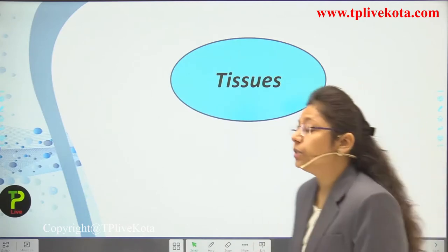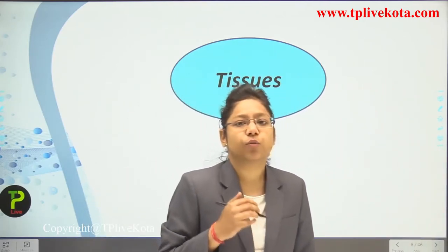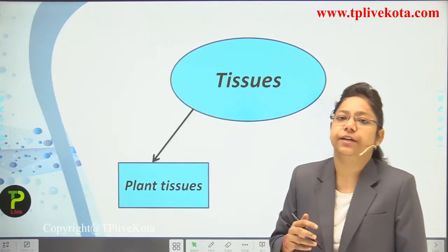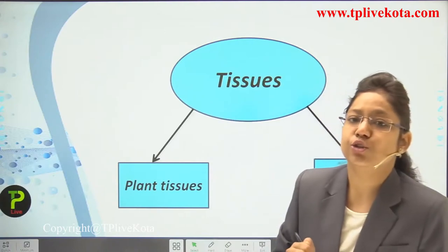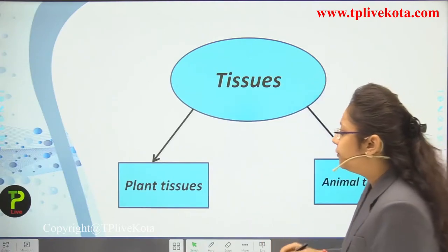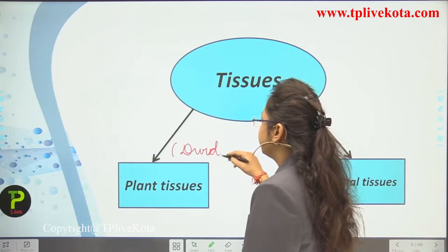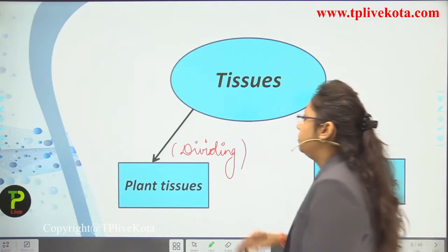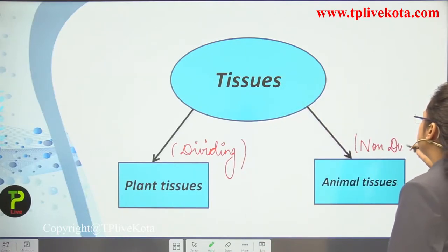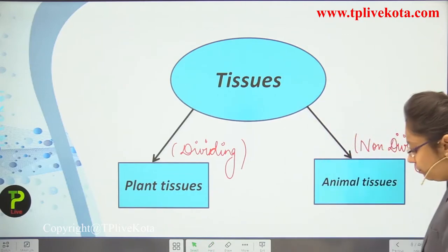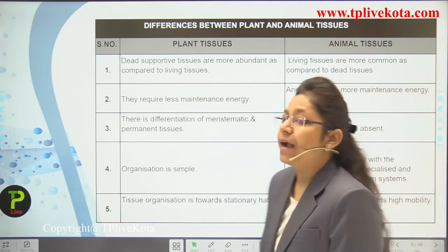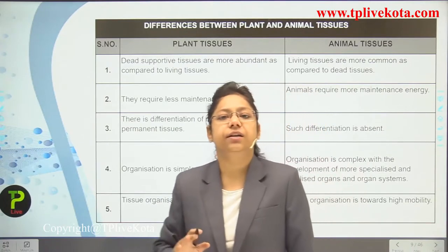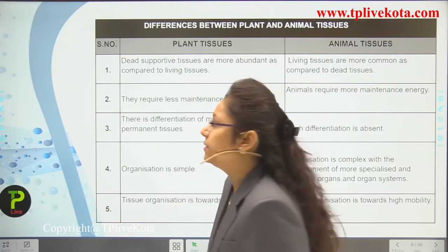Tissue is differentiated into two types: plant tissue and animal tissue. We will first learn about plant tissue. Plant tissues are dividing, while animal tissues are non-dividing. In animals, tissues are non-dividing but cells on an injured part get repaired by formation of new cells. Now let us understand the differences between plant and animal tissues.